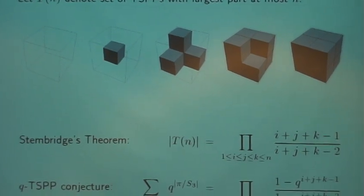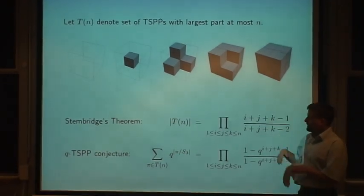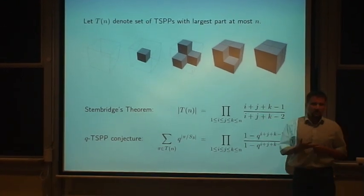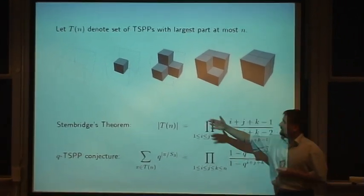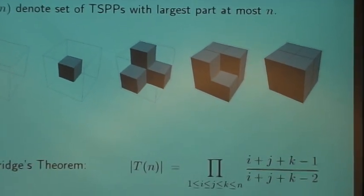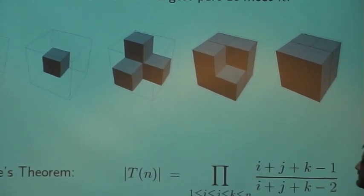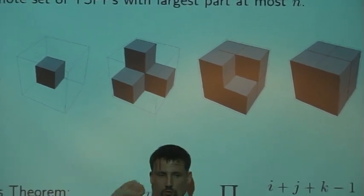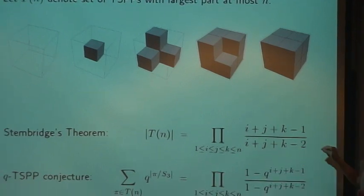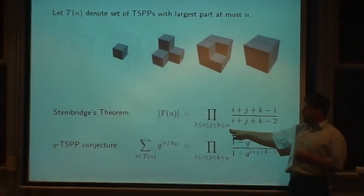This counting work in Stembridge's theorem - in the standard TSPP case we were just interested in the number of such plane partitions. Here I listed all totally symmetric plane partitions that fit into a cube of length 2, so n equals 2, and you can easily verify this formula for n equals 2.